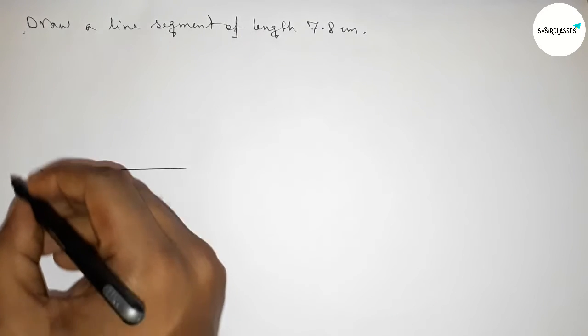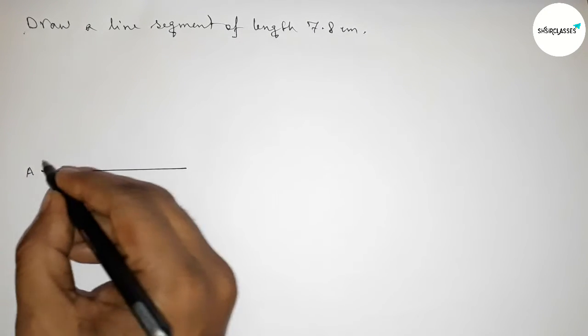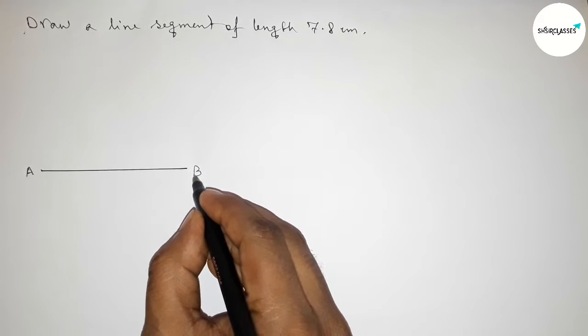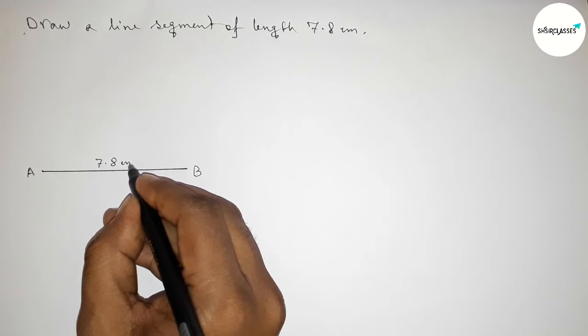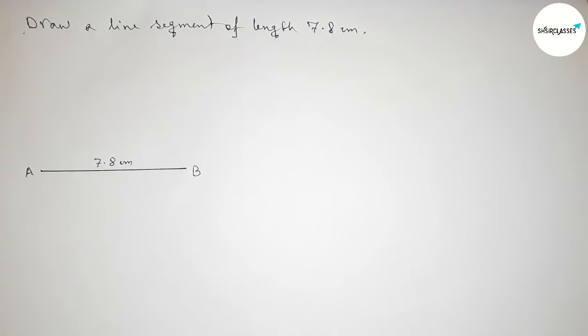Okay, so now mark point A here and point B here. So AB is a line segment of length 7.8 centimeters.